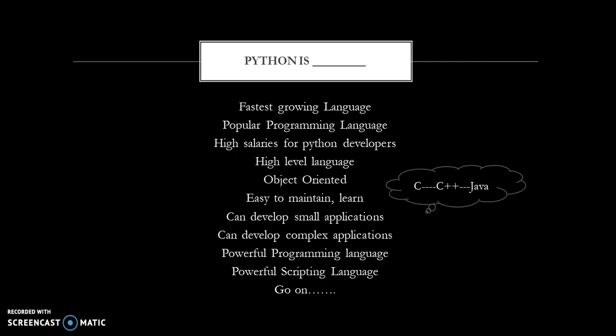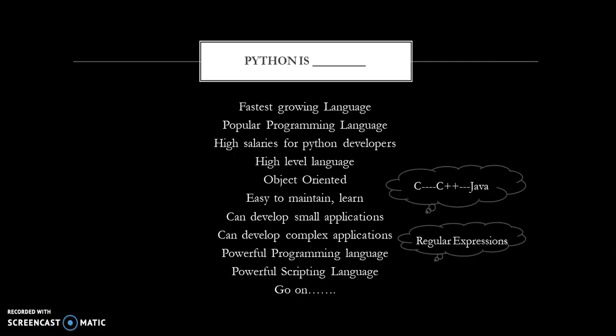Why is Python called a powerful scripting language? Because of pattern matching — like regular expressions. In regular expressions, powerful string pattern matching is done using symbols, and this can be done easily using Python programming language. That is why it is called a powerful scripting language.